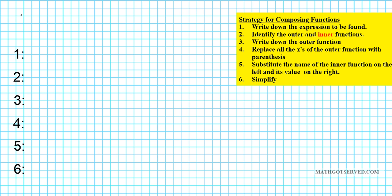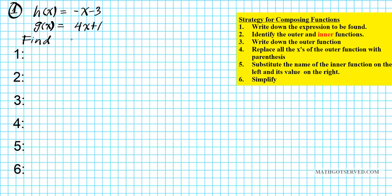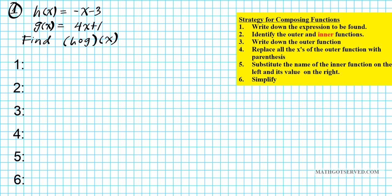For number one, what if we have two functions h and g: h equals negative x minus 3 and g equals 4x plus 1. What if we were to find h composed with g of x? So in this problem, we're going to be carrying out the composition of two linear functions.